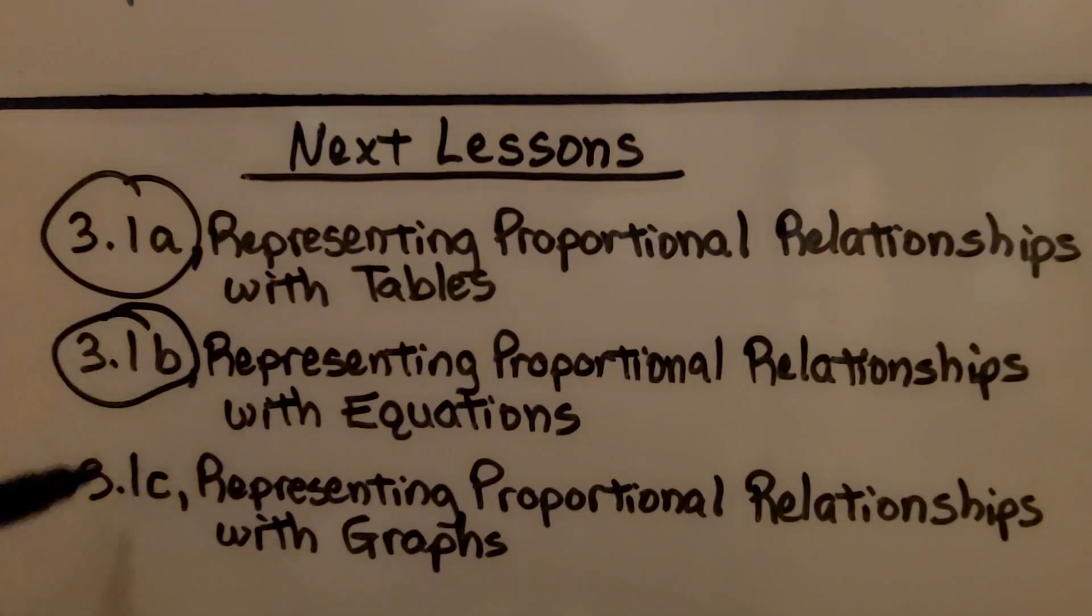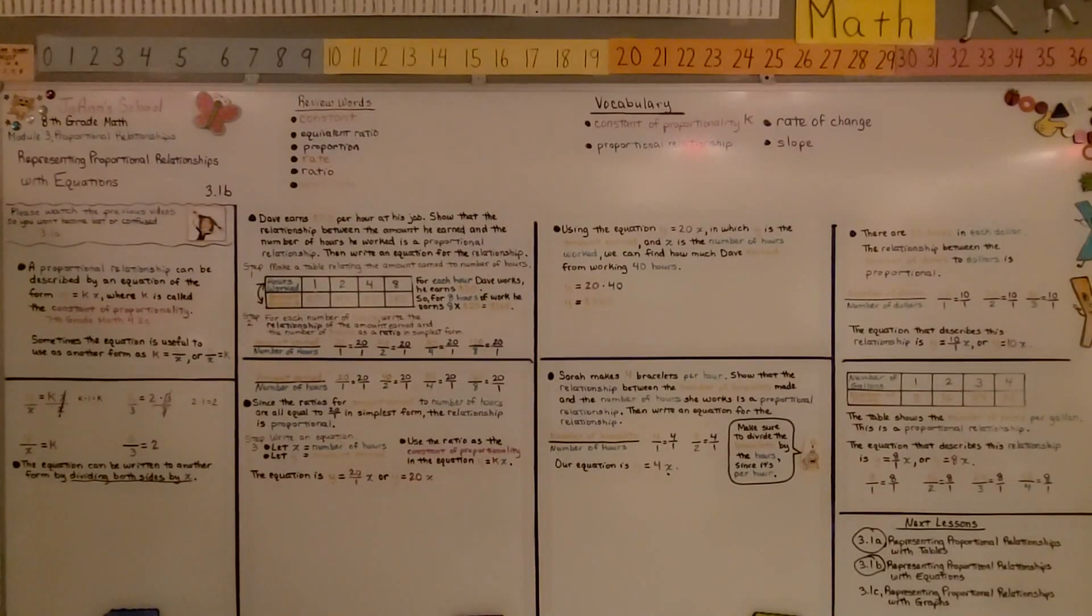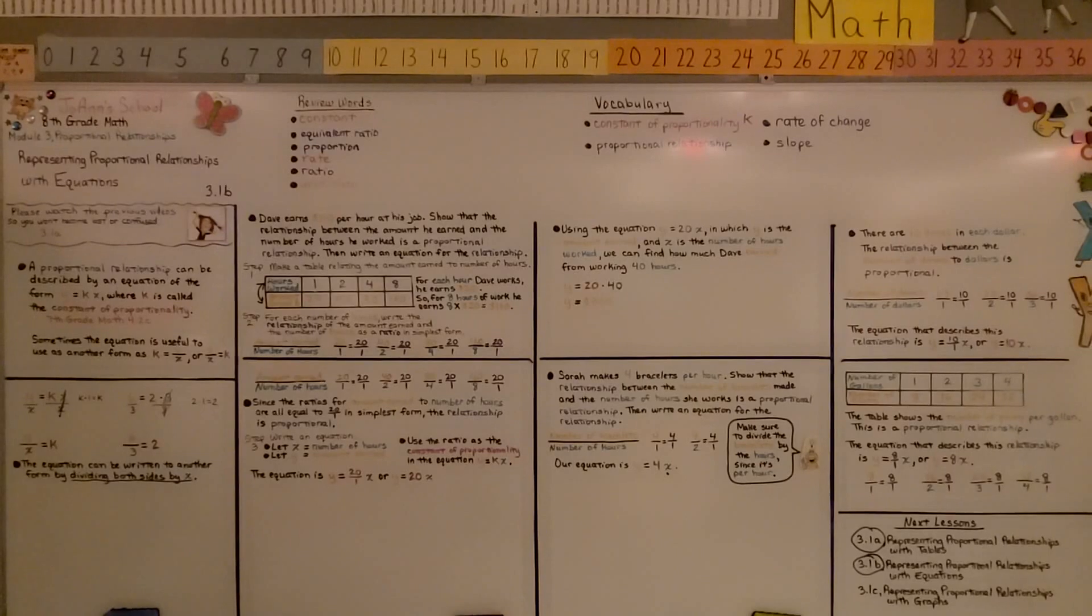We're finished with b. We're going to move on to c, representing proportional relationships with graphs. Remember, if you're a little rusty on constant of proportionality, you can click the description and watch 7th grade math 4.2c. It's not a very long video at all. I hope you have a great day and I hope you join me for the last part of the lesson. Bye.